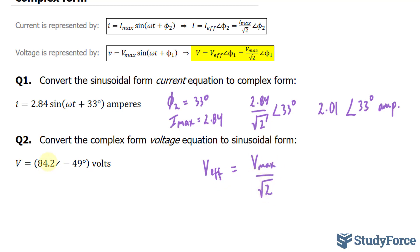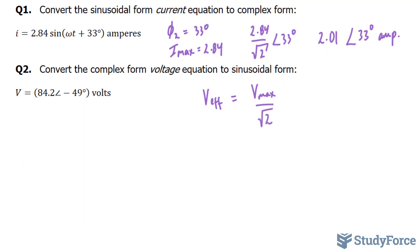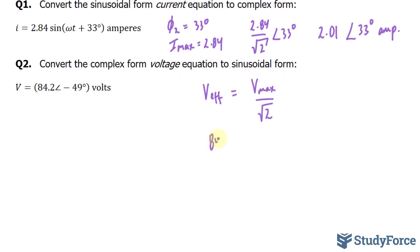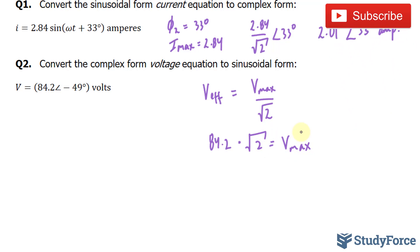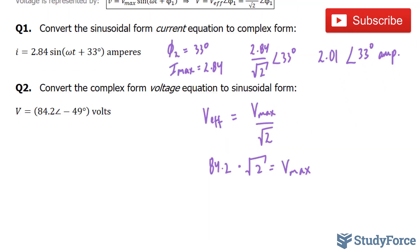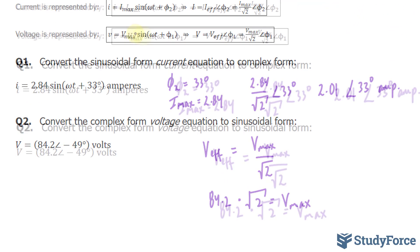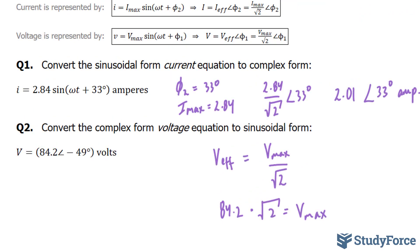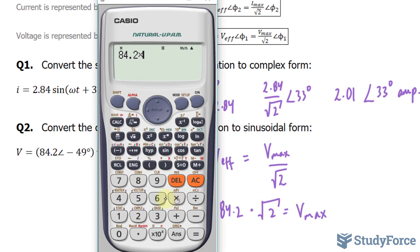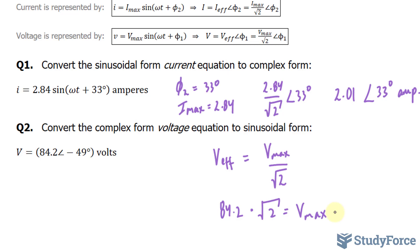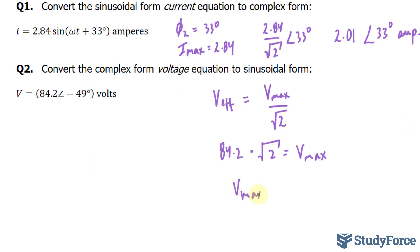That being said, I'm going to substitute 84.2 into here. So we have 84.2 times the square root of 2, which gives us V max. And then we can use V max to substitute it into this template. Let's go ahead and do that. 84.2 times the square root of 2 gives us 119.1, so V max is 119.1.